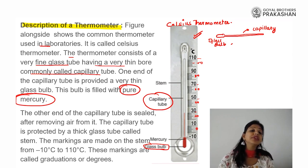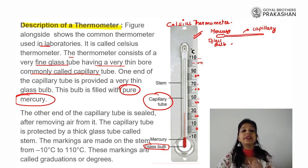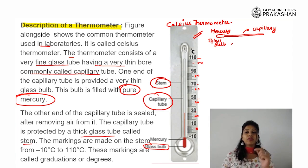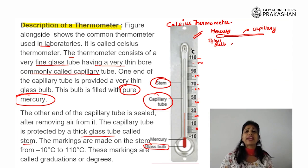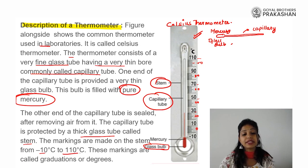One end of the capillary tube is provided with a thin glass bulb filled with pure mercury. We use mercury to measure the temperature of any object. The other part of the capillary tube is sealed, removing all the air — so there is only mercury in the capillary tube and glass bulb. The capillary tube is further protected by a thick glass tube called the stem. What we hold in our hand is actually the stem of the thermometer, because the capillary tube is so fine and fragile that even a little force might break it. The markings are made on the stem from minus 10 degrees to 110 degrees Celsius.